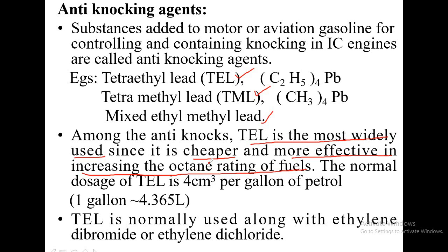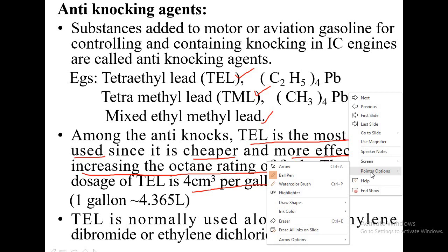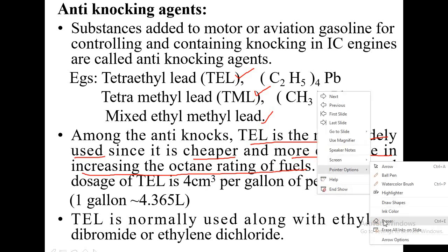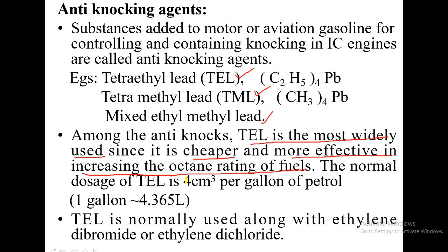Higher the octane rating, better the fuel and lower the knocking. The normal dosage of tetraethyl lead is 4 cm³ per gallon of petrol. One gallon is about 4.365 litres of petrol, and we are adding just 4 cm³ of tetraethyl lead.